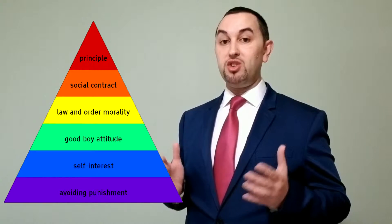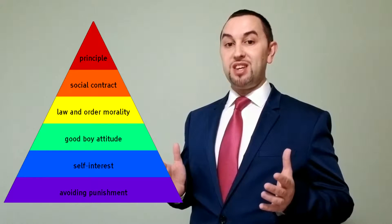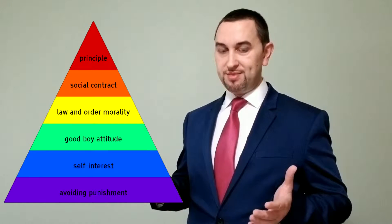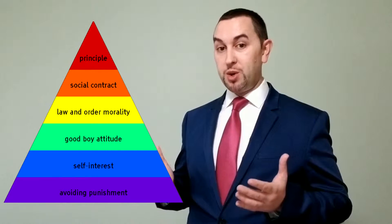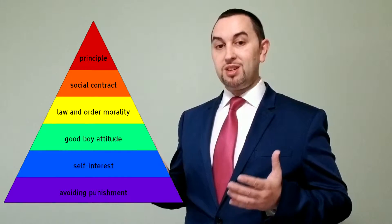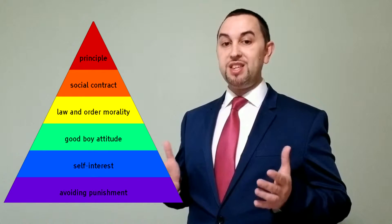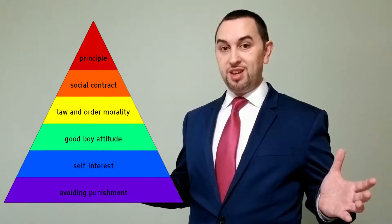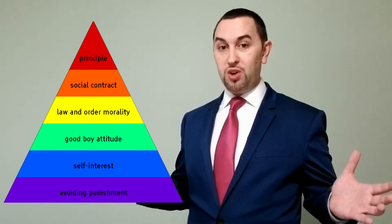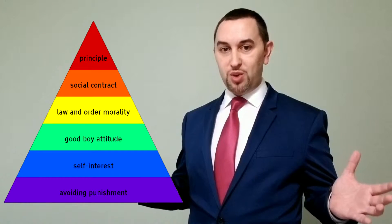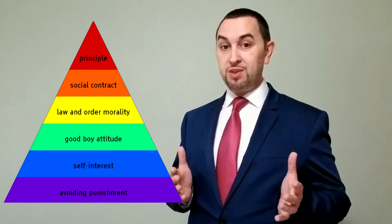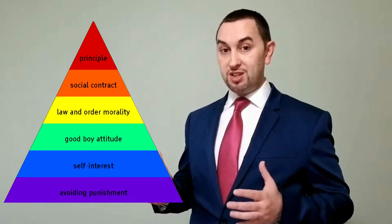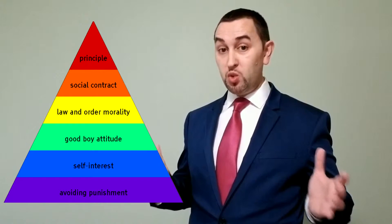Stage six is about universal principles. At this stage, you realize that just because the majority agree on something, it doesn't make it right. The majority could make laws that are bad for a minority of the people. So you begin to develop your own morals. These morals are objective and universal — they apply to everyone. You believe in human rights, justice for all, and that everyone is equal. And you will uphold your principles even if you have to go against society, even if you have to face social rejection or be put in jail. You will stand up for what you believe is right.